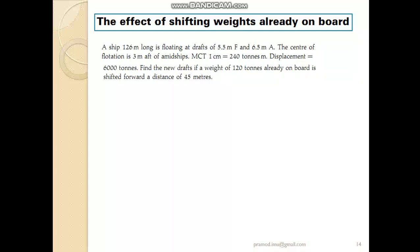We have a question here. A ship 126 meters long is floating at a draft of 5.5 meters forward and 6.5 meters aft. The center of flotation is given to be at 3 meters aft of midship. The MCT 1 centimeter is 240 ton-meters and the displacement of the vessel in this present condition is 6000 tons. Find the new drafts if a weight of 120 tons already on board is shifted forward a distance of 45 meters.